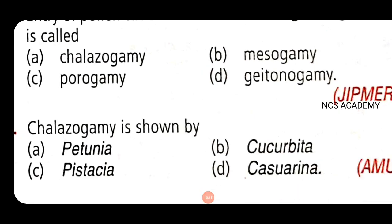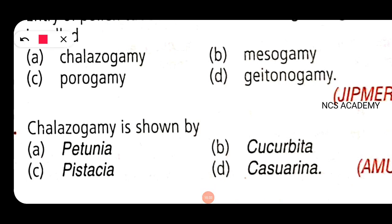Next, an AMU exam question: chalazogamy is shown by which plant? The right option is Casuarina. Let's write the example — the answer is option D, Casuarina.